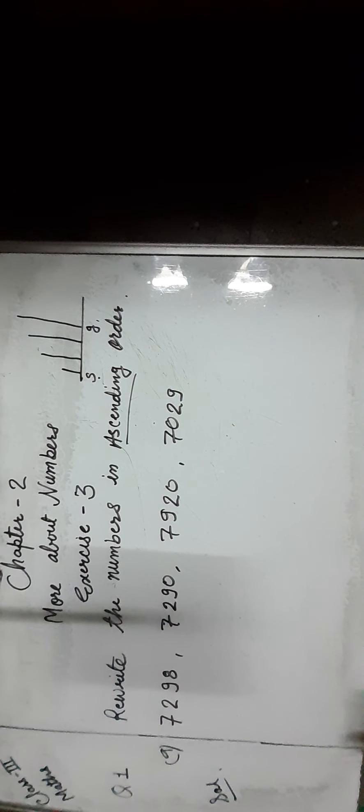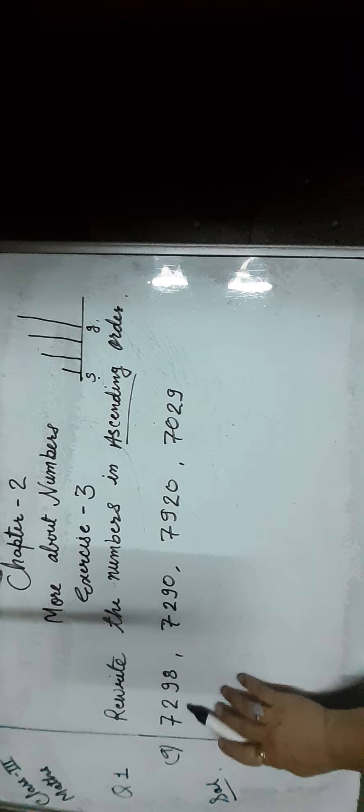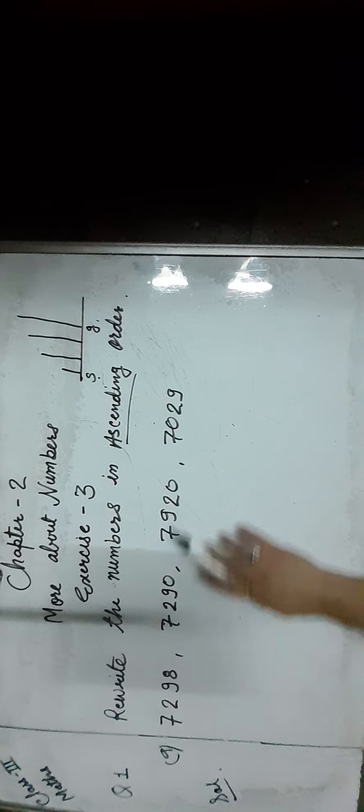So let us compare the given numbers and find out the smallest number first. We find out the place value of each digit. As you can see, all numbers have 4 digits.